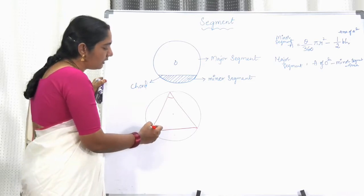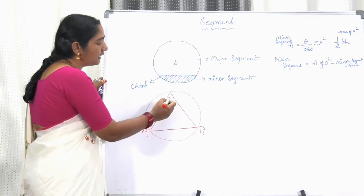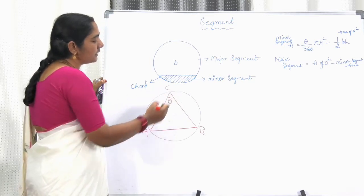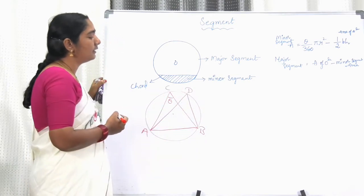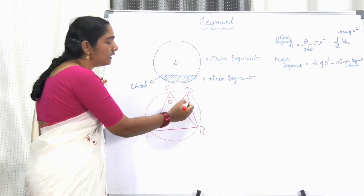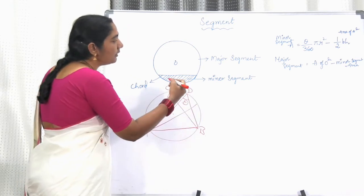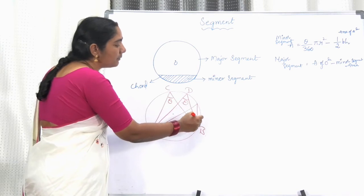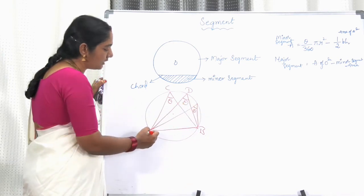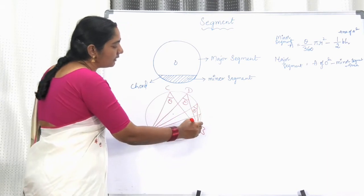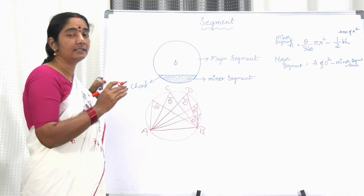For example, if the chord is AB, it subtends an angle theta at a point C on the major segment. The same angle theta is subtended at any point on that segment. In a given segment, the angle subtended by the chord at any point is theta — it is always the same theta, and this theta is always acute, less than 90 degrees.